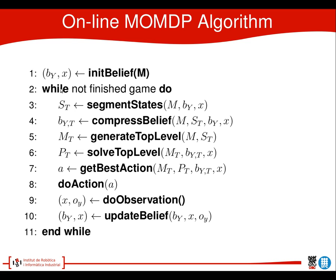The algorithm works as follows. We start with an initial belief and continue this loop until the game is finished. First, we segment using the robot-centered segmentation. We compress the belief to the top level, calculating the top-level initial belief based on the lower-level belief. We generate the top-level MMDP — changing the transition functions and observation function. Then we find the policy for that MMDP and use this policy to get the best action in the current state. We execute this action, which brings us to a new position, where we do a new observation giving us the seeker position and the observation of the hider's position, and use this to update the belief at the lower level.